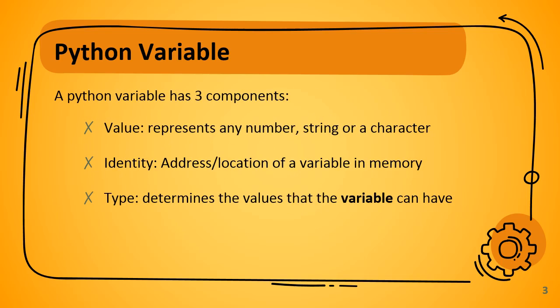A Python variable has three components. The first component is the value — it is any number, string, or character which is assigned to a variable. For assigning this value to a particular variable, we use the assignment operator, the equal-to sign.